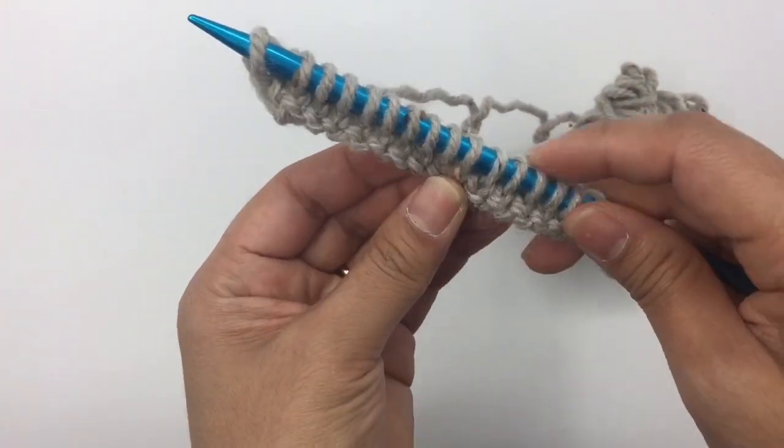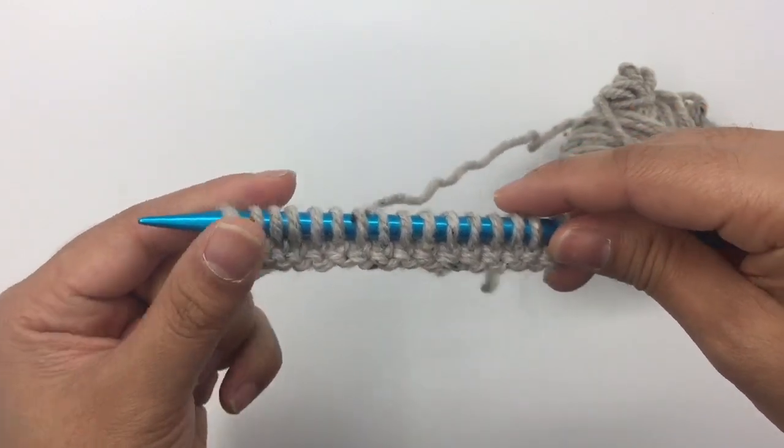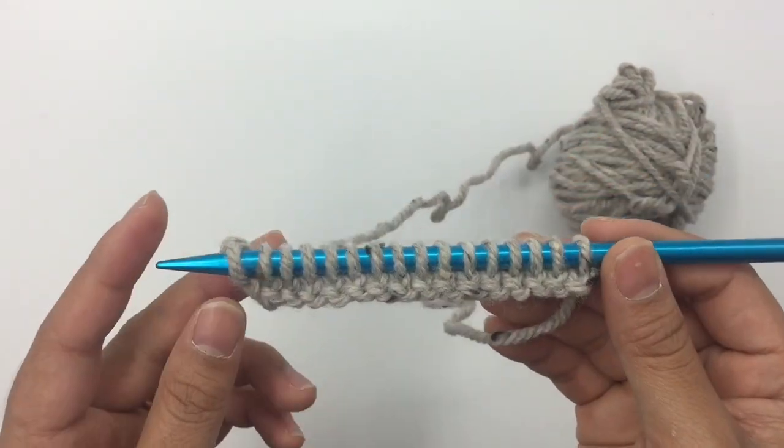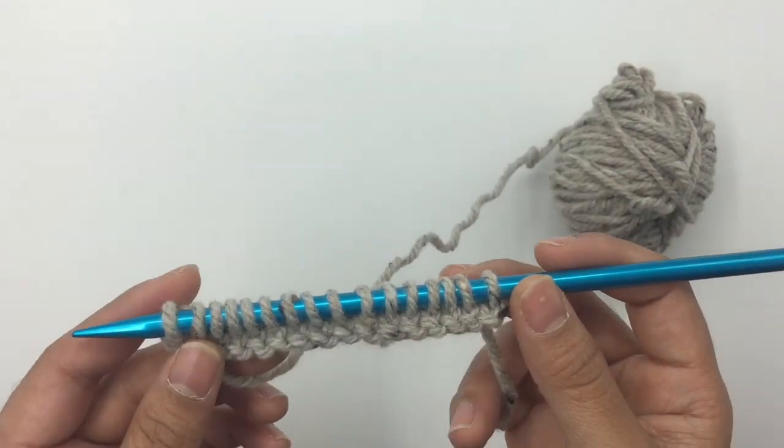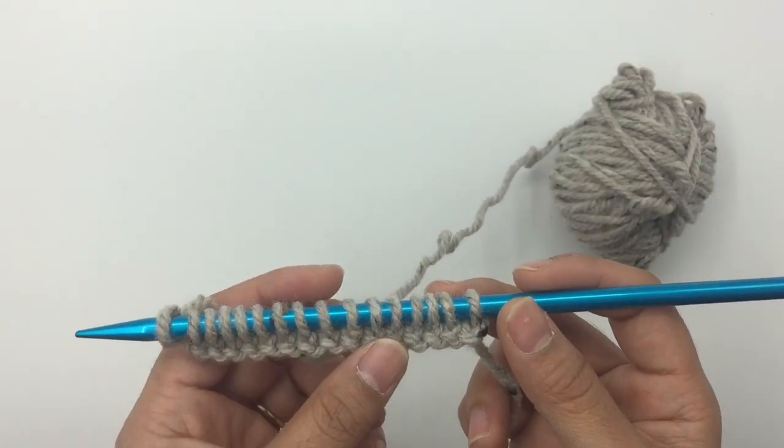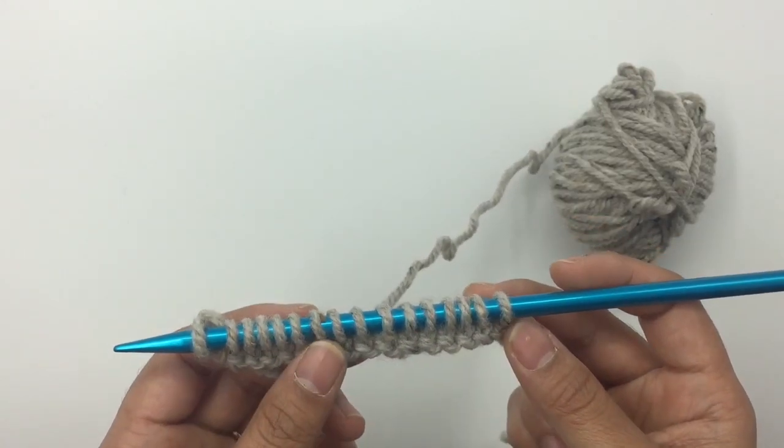As you can see, it starts to create a V-shape. That's what knitting stitch looks like. This is just the first row. That's why it's kind of difficult to see the stitches. If you make a couple rows, you will see the stitches better.